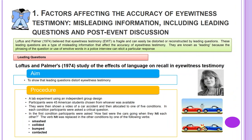Factors affecting the accuracy of eyewitness testimony: misleading information, including leading questions and post-event discussion. Loftus and Palmer in 1974 believed that eyewitness testimony is fragile and can easily be distorted or reconstructed by leading questions. These leading questions are a type of misleading information that affect the accuracy of eyewitness testimony. They are known as leading because the phrasing of the question or use of emotive words in a police interview can elicit a particular response.